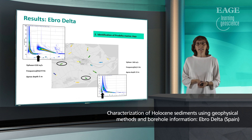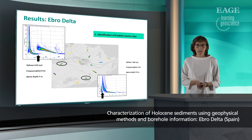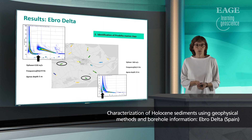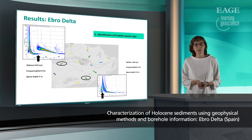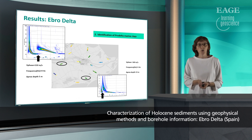Focusing now on delineation of the pro-delta marine clays, these are two examples where two clear energy jumps are observed. The frequency is higher inland, corresponding to a shallower low-velocity layer compared to the other side shown in this slide.